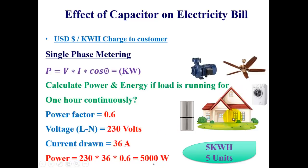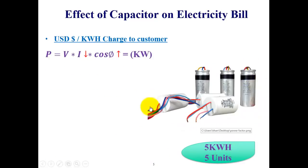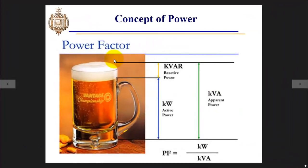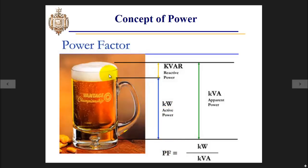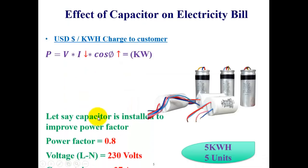Now let's connect a capacitor across the supply and see whether it reduces consumption. First, I want to clarify the concept of power factor. When you install a capacitor, the only thing it does is improve the lagging power factor. Using a wine glass analogy: the total glass represents apparent power, the wine represents active power, and the foam represents reactive power. The capacitor improves power factor by decreasing the foam and increasing the space for wine in the same glass.